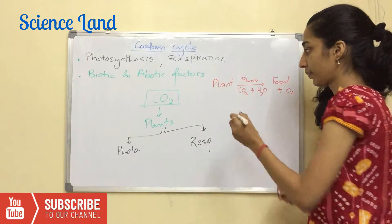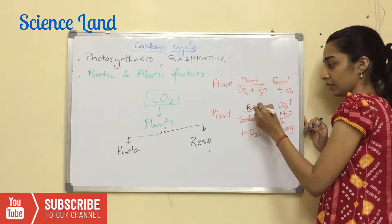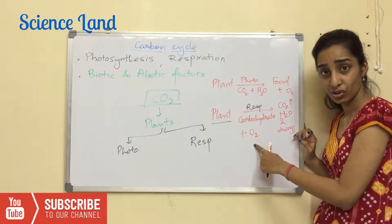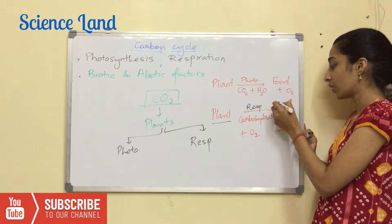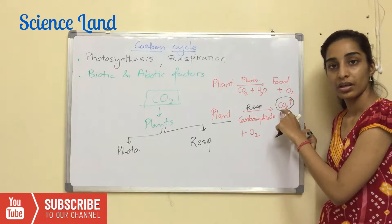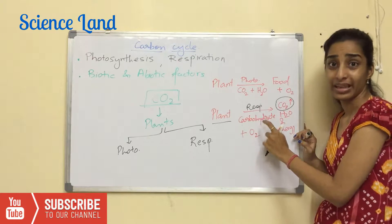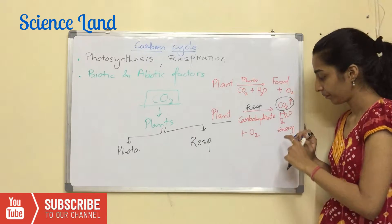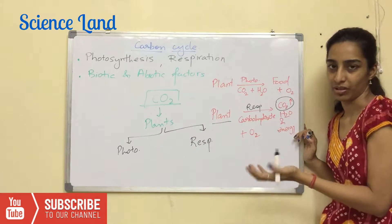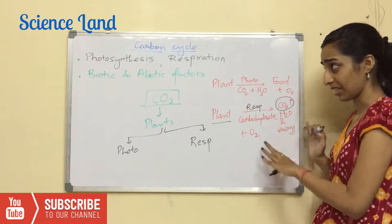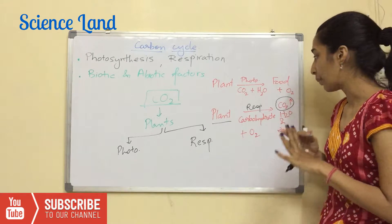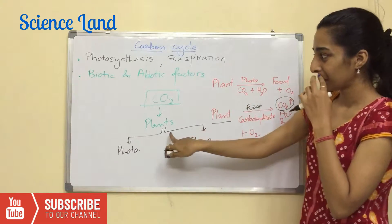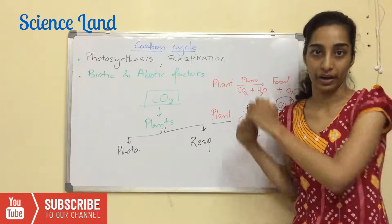In the respiration process, the plant uses carbohydrates and oxygen, converting the carbohydrate back into gas and releasing carbon dioxide into the atmosphere. These are the two processes and that is the first step of the carbon cycle.